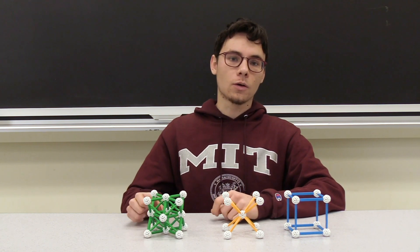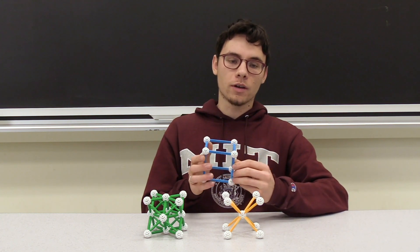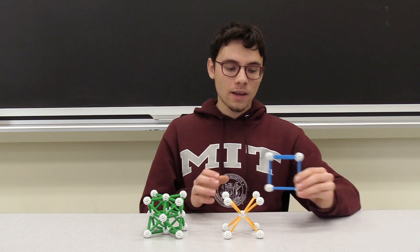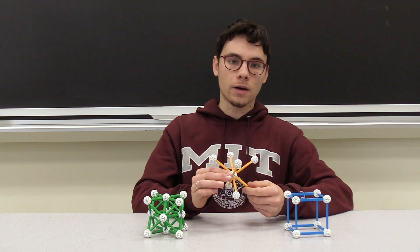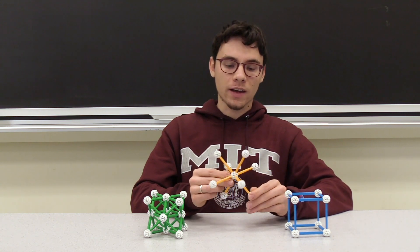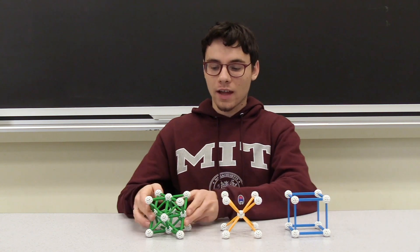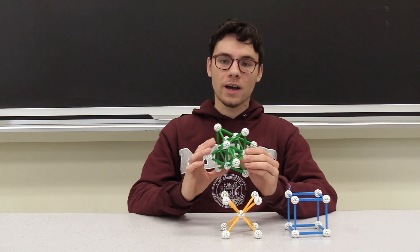Each of these lattices has a different coordination number. That is, an atom in each lattice has a different number of nearest neighbors. If we imagine these atoms as hard spheres rather than this ball and stick model, we can see that each lattice will also have a different atomic packing factor. That is, each lattice will have a different volume of space occupied in the unit cell.